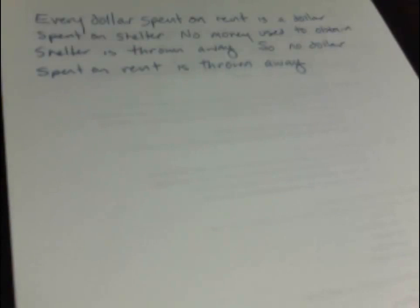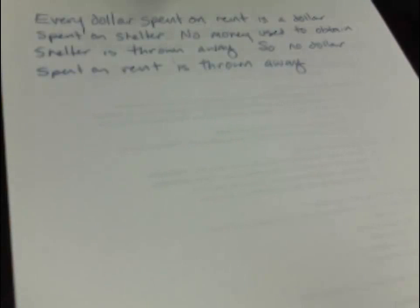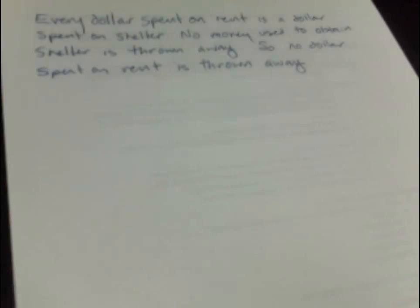This video provides three examples of checking arguments for validity on a three-circle Venn diagram. The first example is: every dollar spent on rent is a dollar spent on shelter. No money used to obtain shelter is thrown away. So, no dollar spent on rent is thrown away.